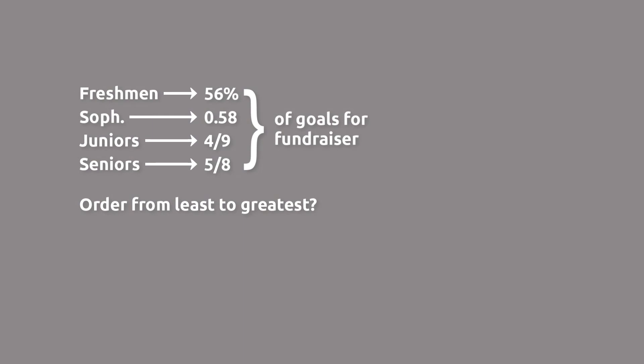We're told that the freshmen have raised 56% of their goal, sophomores have raised 0.58 of their goal, juniors have raised 4/9 of their goal, and the seniors have raised 5/8 of their goal. We're asked to list the classes in order from least to greatest of their goal percentages or proportions.